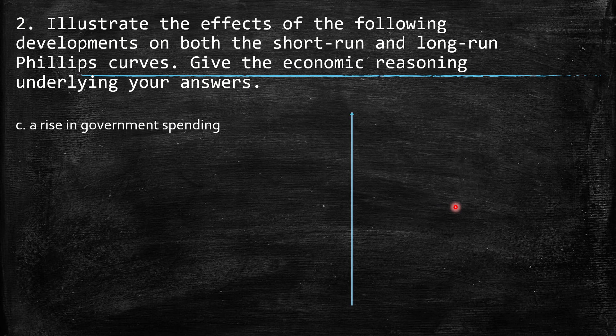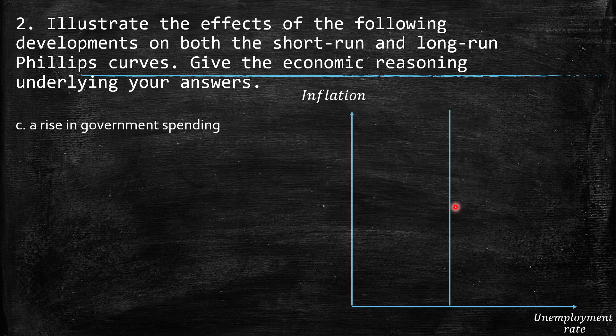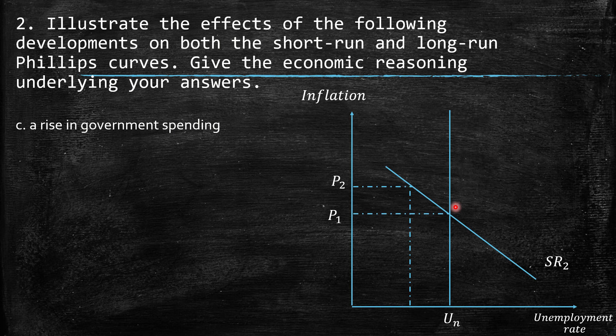C: a rise in government spending. When we have this, it causes a shift to the right of aggregate demand, and as a consequence we have a move along the curve. We move to P2, and then there is a lower unemployment rate, at least temporarily, compared with the natural rate. This is a move along the curve without any shift.